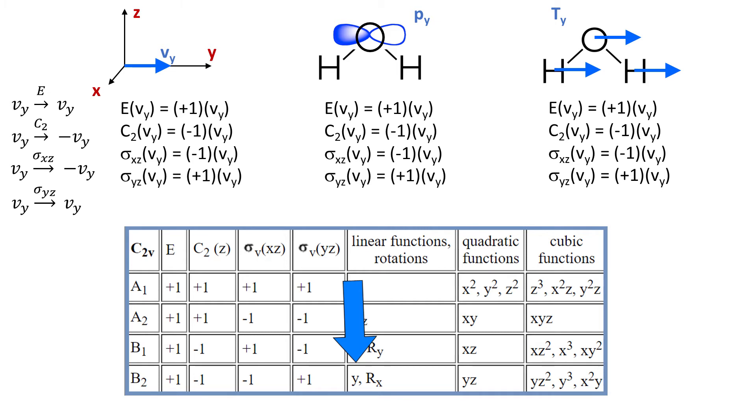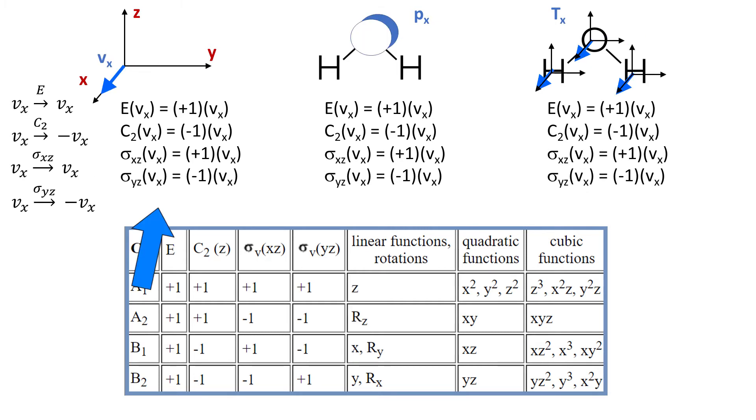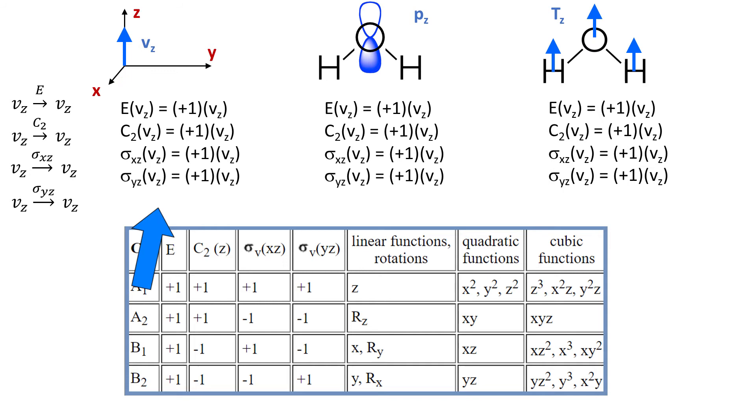And that is what y effectively means here. Similarly, if we use vector vx or orbital px or tx translational vector, we would get B1. And if we take vector vz or orbital pz or tz translational vector, then we would get A1.